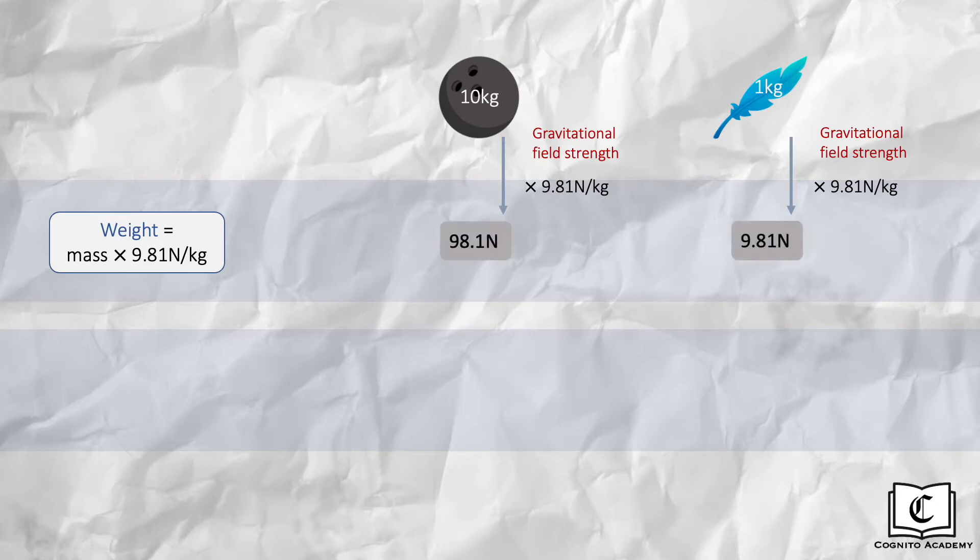Let's assume the bowling ball to be 10kg and the feather 1kg. We know that gravitational field strength on Earth's surface is 9.81N per kilogram, meaning for every kilogram it experiences a weight of 9.81N. Hence, we multiply both masses by 9.81N per kilogram to get their weight.